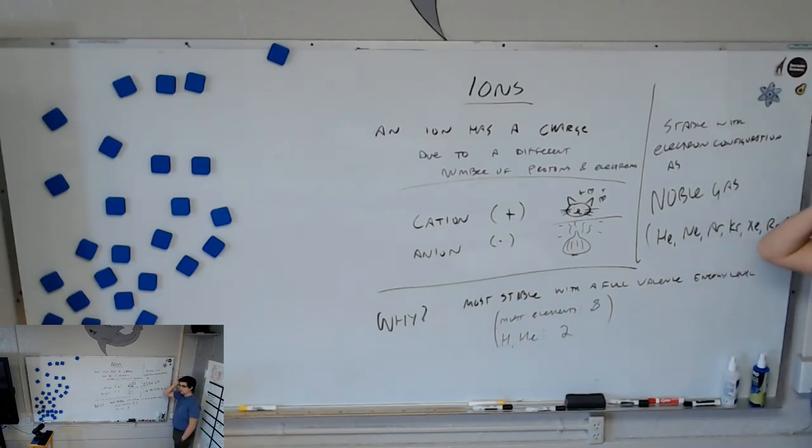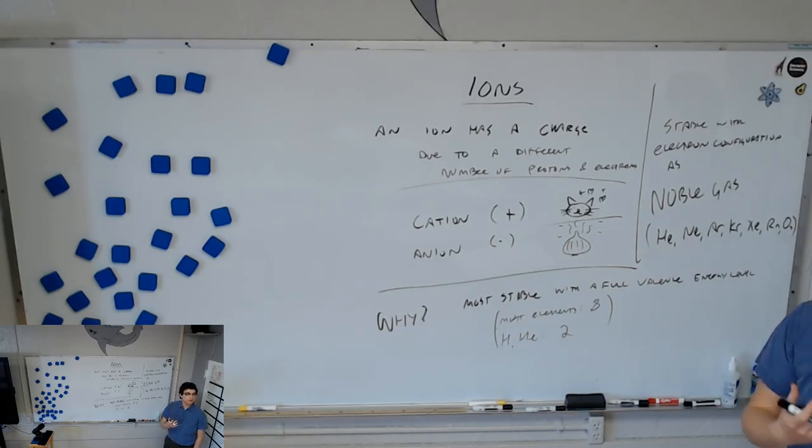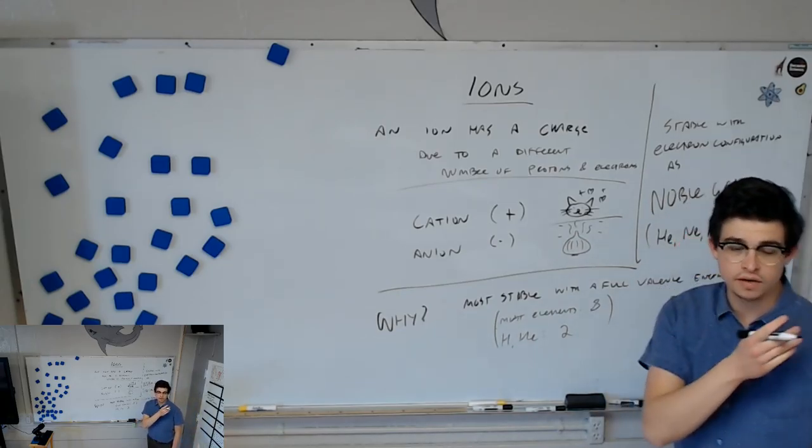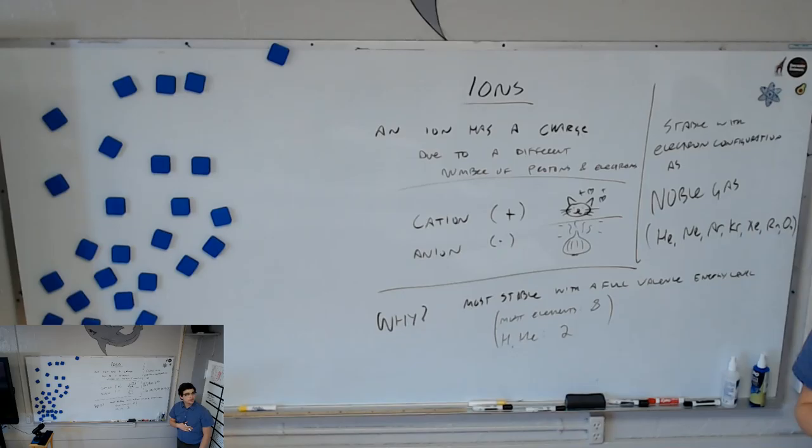So, what does that mean, like, as noble gases? Like, they have the same. So, for instance, if we look at chlorine, which has an electron configuration of 1s2, 2s2, 2p6, 3s2, 3p5, it would be more stable if it was that, but with 3p6. It's just like argon has, right?